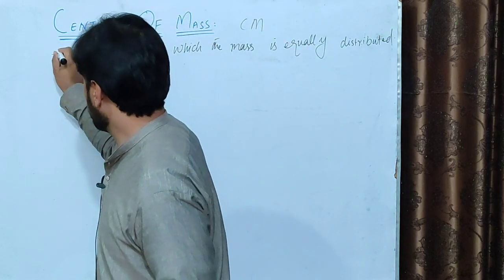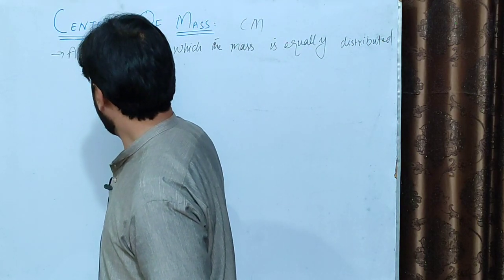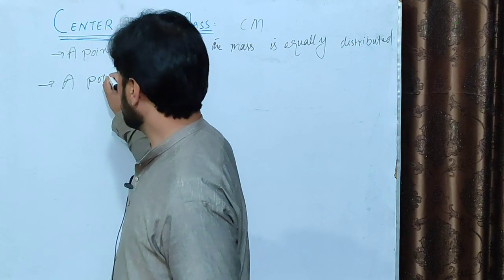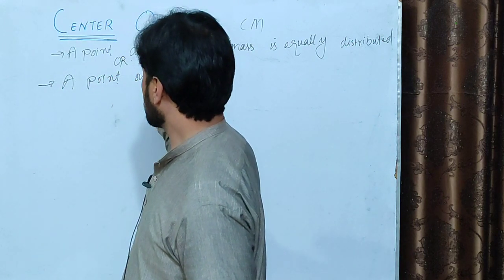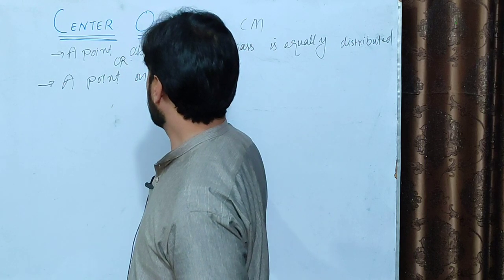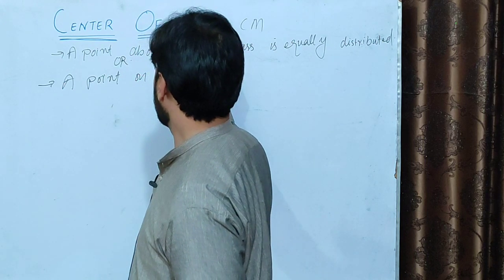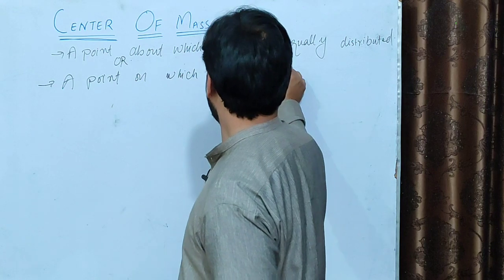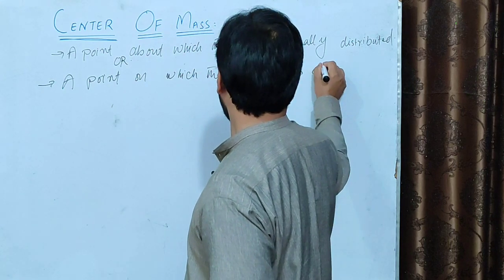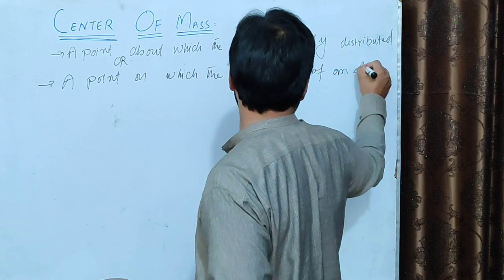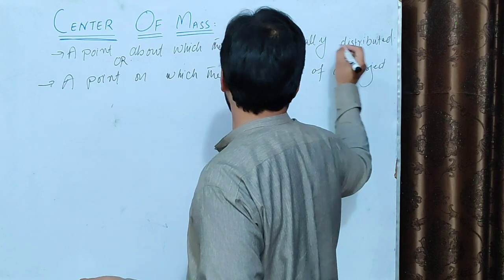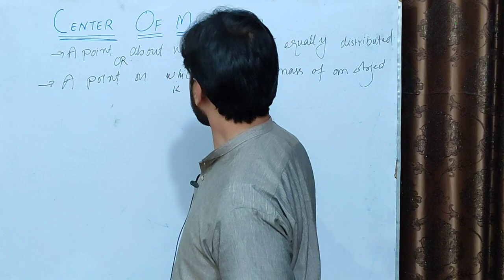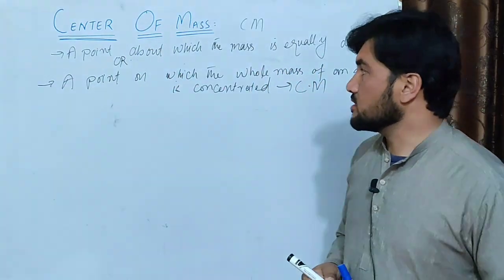The definition of center of mass is: a point on which the whole mass of an object is concentrated. The point is concentrated — a point among the same center of mass.